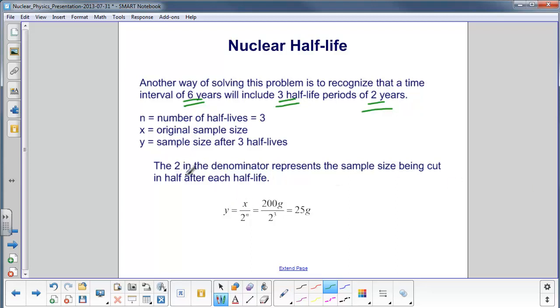The 2 in the denominator represents the sample size being cut in half after each half-life. So y, which is your final amount of material, is equal to x, the original, divided by 2 raised to the n power.